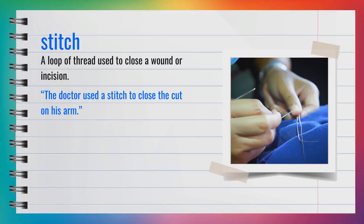The word stitch, spelled S-T-I-T-C-H, is a noun. A stitch is a loop of thread used to close a wound or incision. It's similar to words like suture or seam. For instance, the doctor used a stitch to close the cut on his arm. In summary, a stitch is used to close wounds.